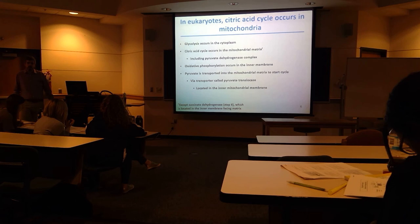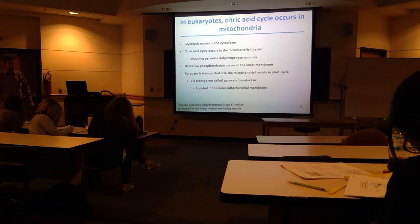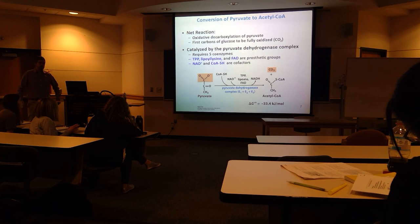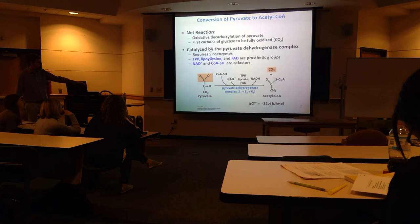Pyruvate is transported into the mitochondrial matrix to start this series of steps for the citric acid cycle. There's a transporter called pyruvate translocase embedded in the inner mitochondrial membrane that allows pyruvate to get through — you can't cross that membrane normally without a specific transporter.